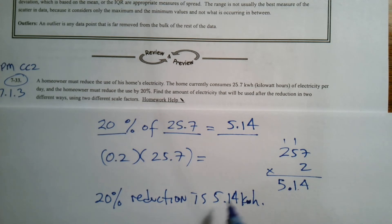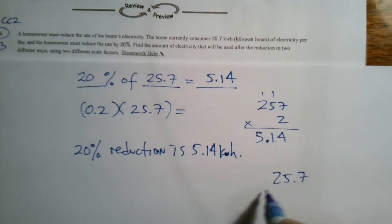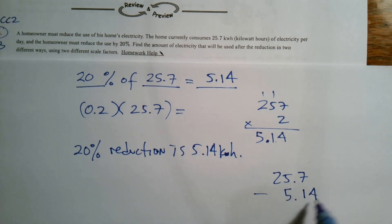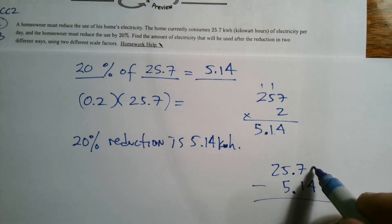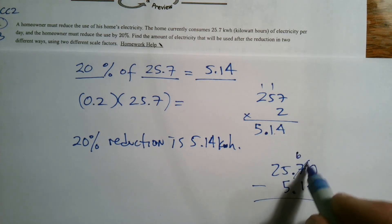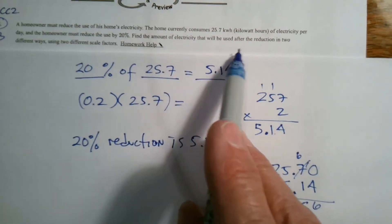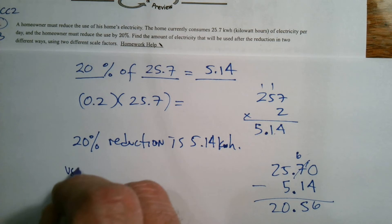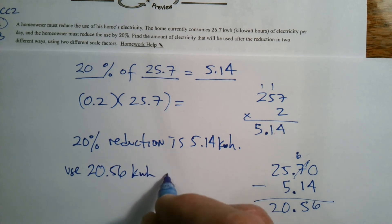What will be used after the reduction would be taking that 25.7 and now subtracting. So I would have to take 25.7 and subtract from it 5.14. When you do subtraction of decimals, remember line up the decimal place and add in your placeholders and then do your subtraction. So here I'm going to regroup and bring down the decimal. So my reduction, the amount of electricity that will be used is 20.56 kilowatt hours after the reduction.